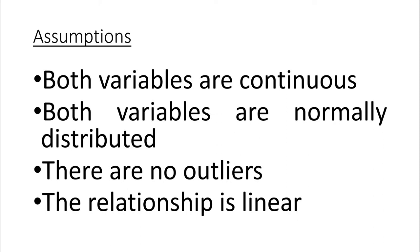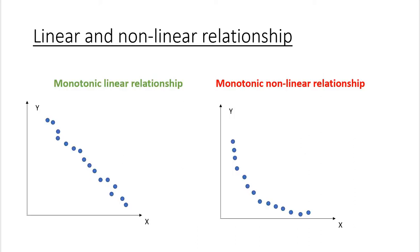Let us discuss what it means precisely to observe a linear relationship between two variables. For this purpose, you can use scatter plots, as we are going to discuss in the very last video of this lecture. Basically, you put data on a graph and try to figure out the main trend. If your data is distributed in this manner, then you are dealing with a monotonic linear relationship. Any linear relationship is monotonic by definition.